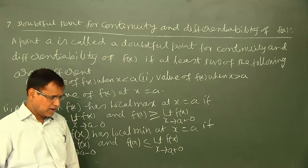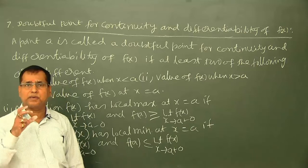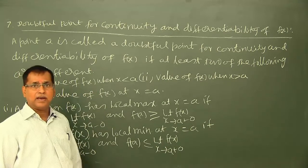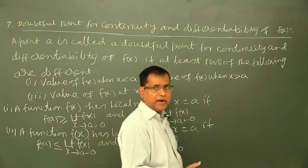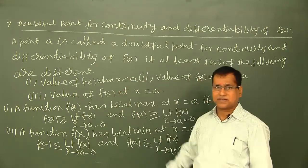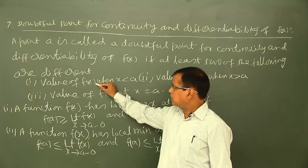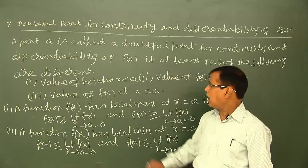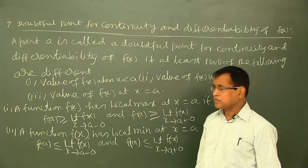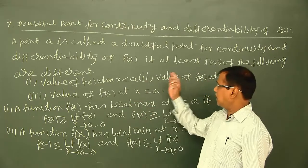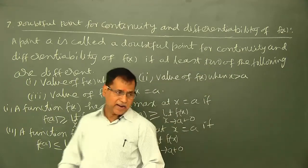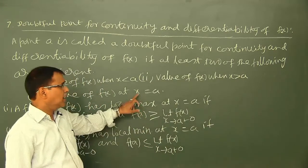First, let us understand what a doubtful point for continuity and differentiability of a function f(x) is. x equal to A is called a doubtful point for continuity and differentiability of a function f(x) if at least two of the following are different: the value of f(x) when x is less than A (i.e., on the left side of A), the value of f(x) on the right side of A, and the value of f(x) at x equal to A.